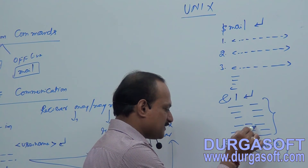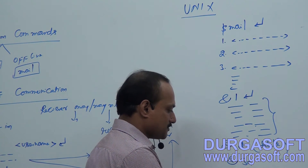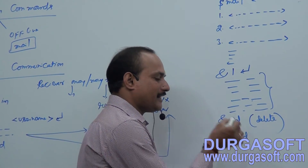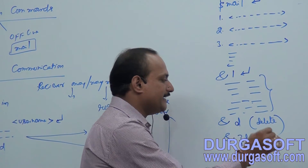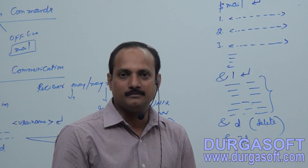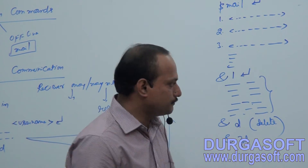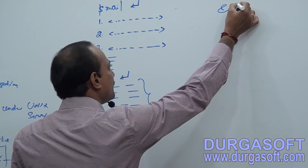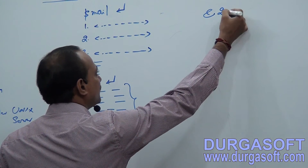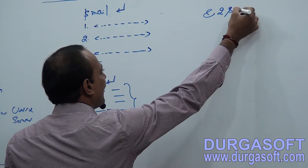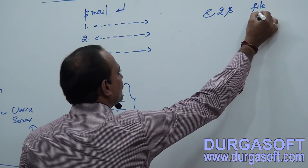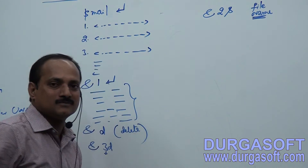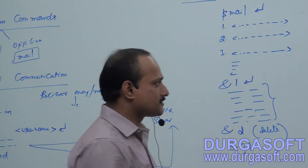If you don't want to delete the current message but want to delete the third message, specify the number of that mail and apply the 'D' command. The third mail will be deleted from your inbox. If you want to save the second mail, at the ampersand prompt type 'S' followed by the file name. The second mail's details will be saved under that file.